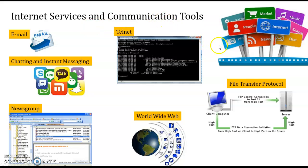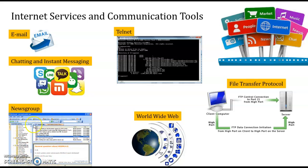What are the internet services and communication tools? First we have email — everybody knows what email is. Then we have chatting and instant messaging: we can use WeChat, Skype, WhatsApp, Telegram, Snapchat — many options. You can chat, you can call, there are many features. Then we have newsgroups, which you can subscribe to and unsubscribe from if you are no longer interested.